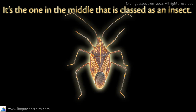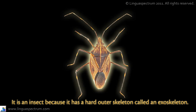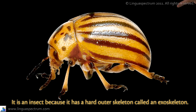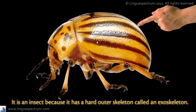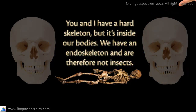It's the one in the middle that's classed as an insect. It's an insect because it has a hard outer skeleton called an exoskeleton. You and I have a hard skeleton too, but it's inside our bodies — we have an endoskeleton, and are therefore not insects.